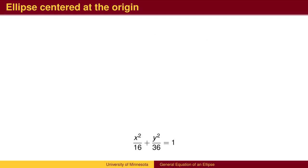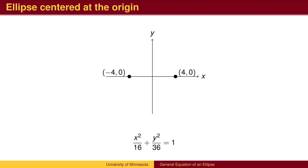Now let's graph the ellipse x-squared over 16 plus y-squared over 36 equals 1. This equation is in standard form; the right side of the equation is 1. 16 equals 4-squared, so the circle has been stretched by a factor of 4 in the x-direction, putting the vertices at (4, 0) and (-4, 0). 36 equals 6-squared, so the circle has been stretched by a factor of 6 in the y-direction, putting vertices at (0, 6) and (0, -6). We can now sketch the ellipse.